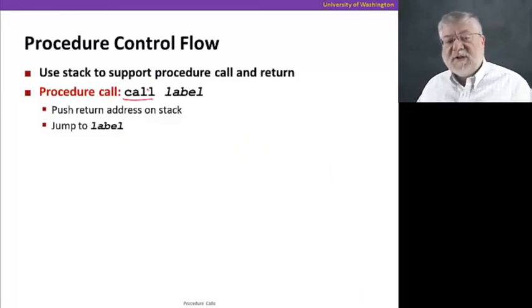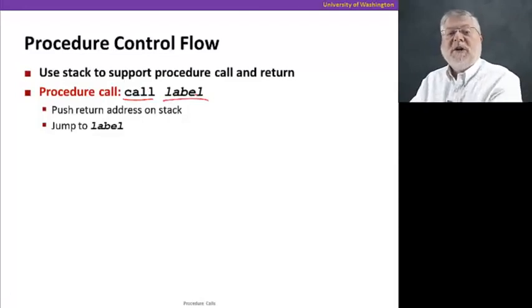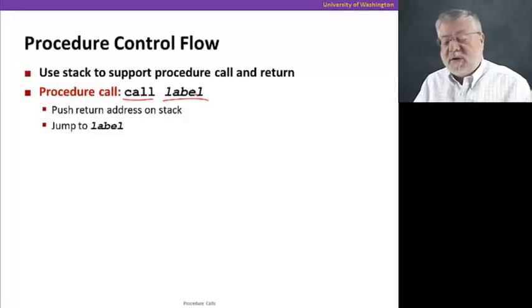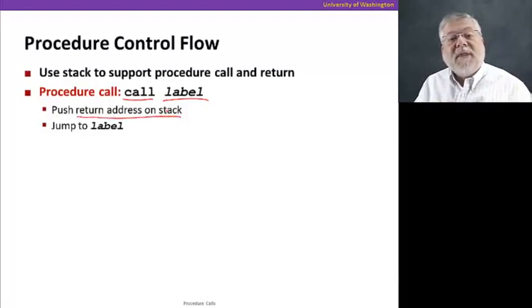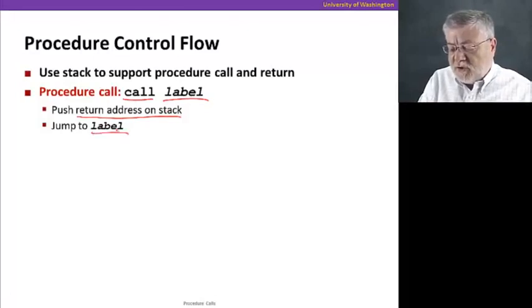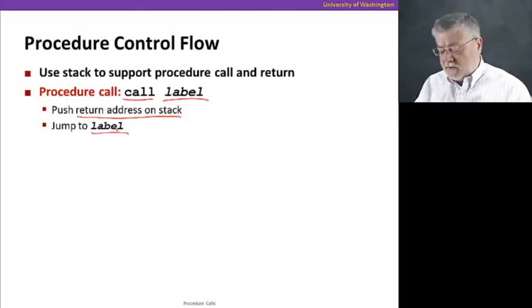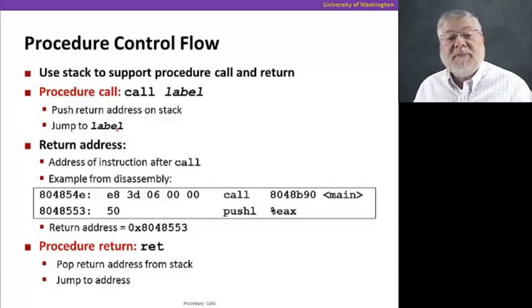We execute a procedure call using the call instruction — C-A-L-L — giving it a label as an argument, namely the address of the callee function. Before we do that jump, as part of the call instruction, we're gonna push the return address onto the stack and save it there. That return address is the address of the instruction immediately following the call — the one we have to go to when we're done executing the procedure. Then we'll jump to the label, namely the address of the callee instruction, just as if it were a jump instruction.